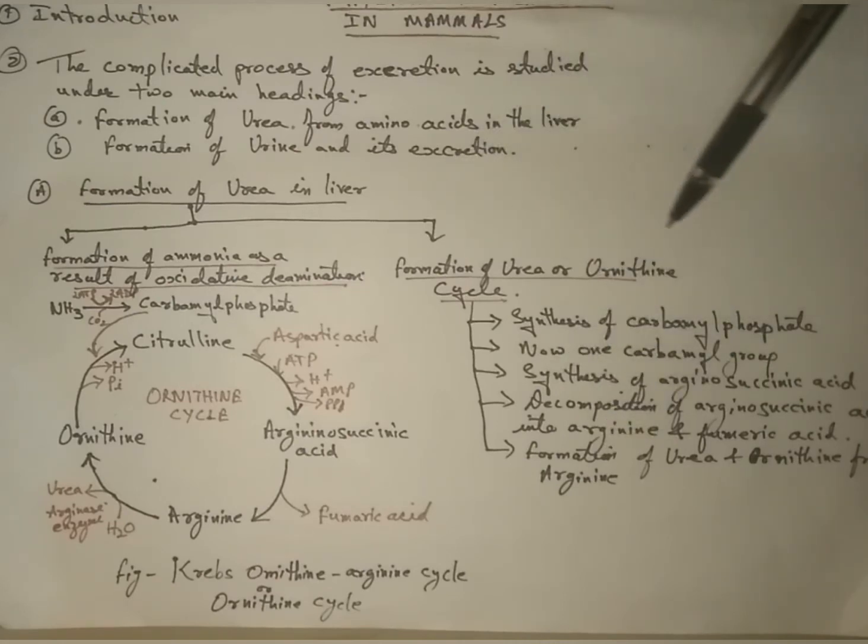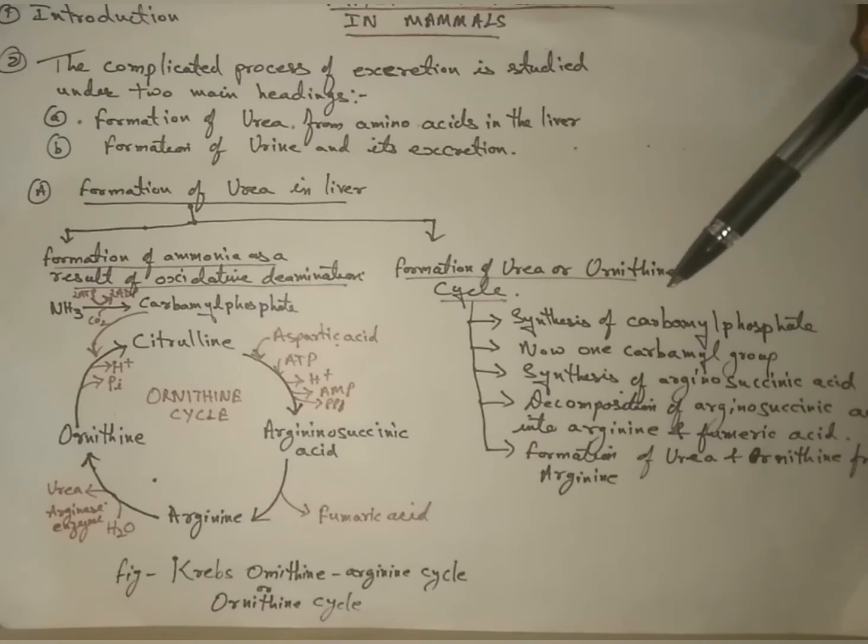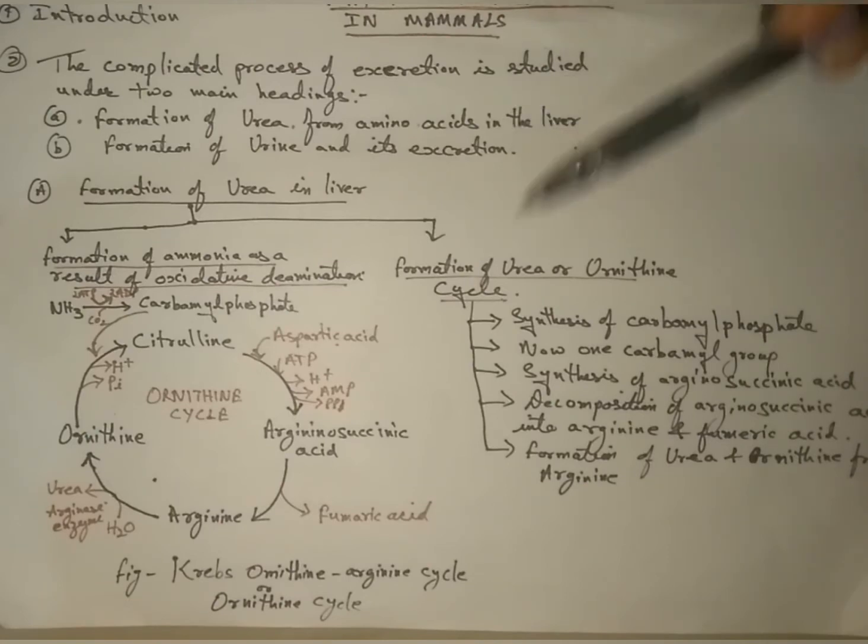Next, formation of urea and ornithine cycle. Ammonia is a very toxic substance which is very much harmful for the body. Therefore, it converts soon into urea, a less toxic substance, which is very essential.